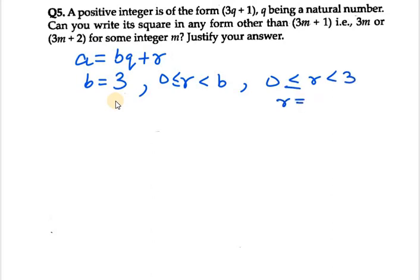So r is less than b, it lies between 0 and 3. Therefore r can take 3 values: that is 0, 1, and 2.